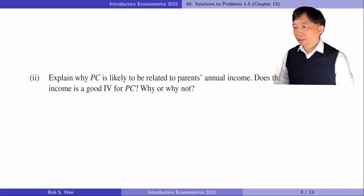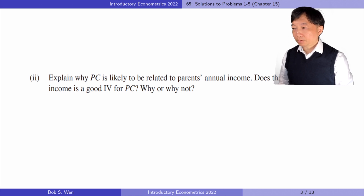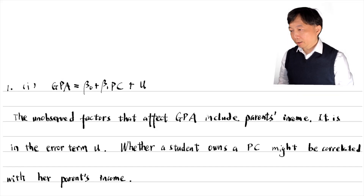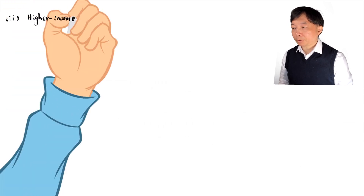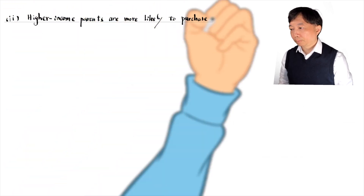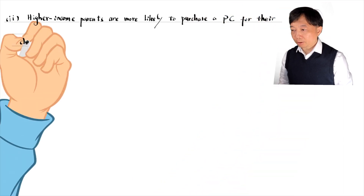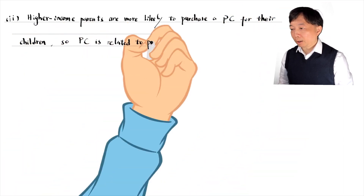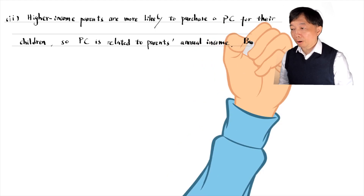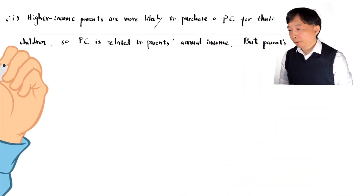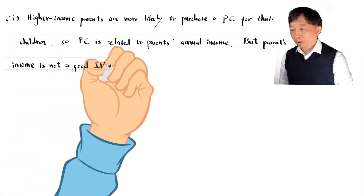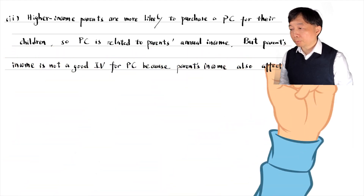In part 2, explain why PC is likely related to parents' annual income. Does this mean parental income is a good IV for PC? Higher income parents are more likely to purchase a PC for their children, so PC ownership is related to parents' annual income. But parents' income is not a good instrumental variable for PC, because parents' income also affects the child's GPA.